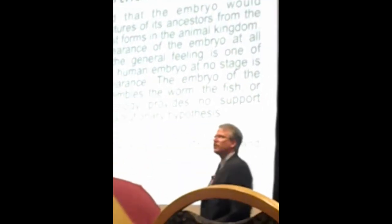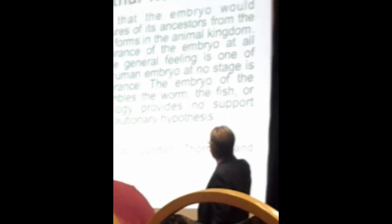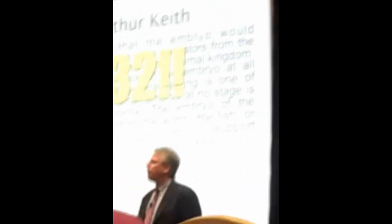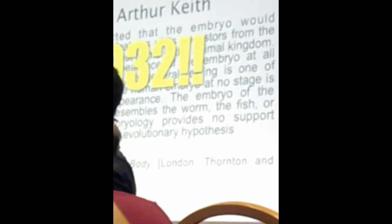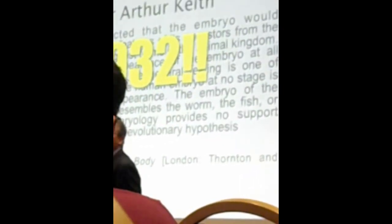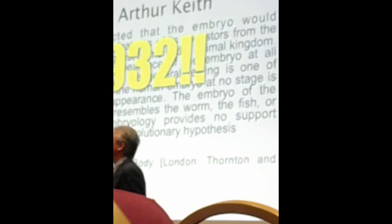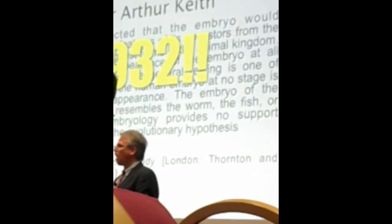Arthur King put it this way: 'It was expected the embryo would recapitulate the features of the ancestors from the lowest to the highest forms in the animal kingdom. Now that the appearance of the embryo at all stages is known, the general feeling is one of disappointment. The human embryo at no stage resembles the embryo of a mammal, worm, fish, or reptile.' The last sentence: 'Embryology provides no support whatsoever for the evolutionary hypothesis.' We've known that since 1932, and yet National Geographic is marching this out as evidence that Darwin is right.